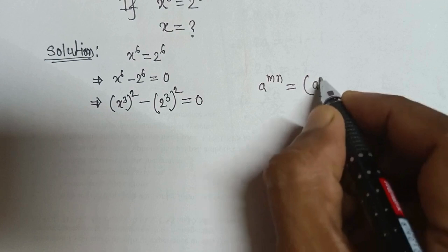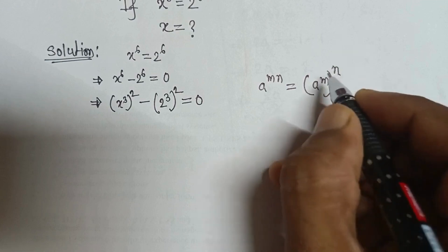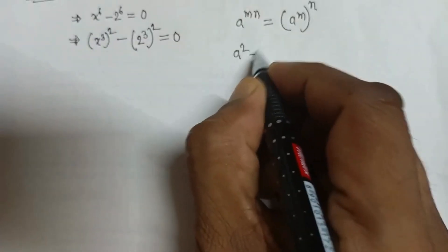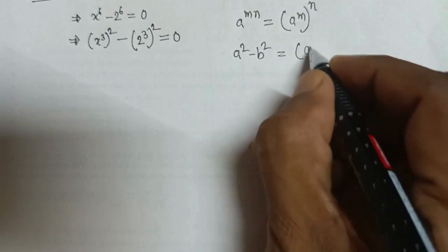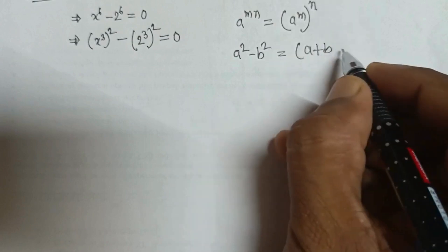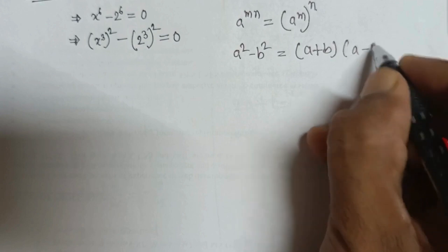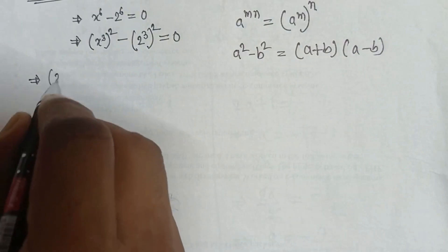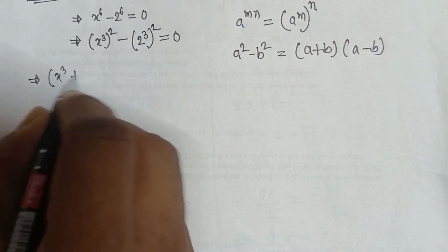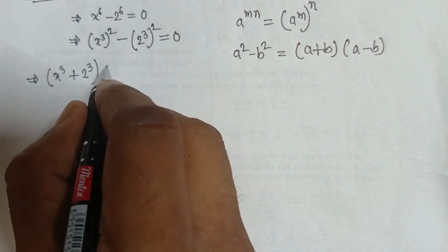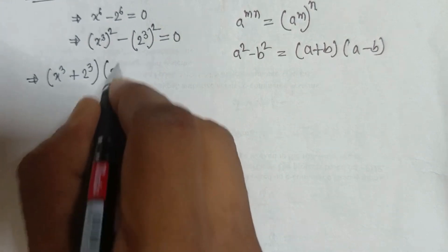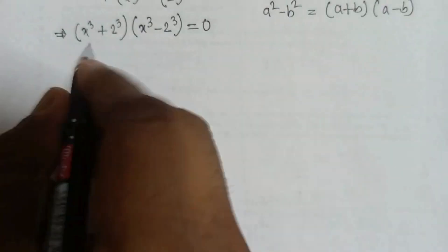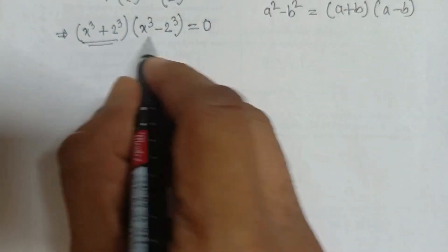As we know, a to the power mn equals a to the power m to the power n. We apply the formula a squared minus b squared equals a plus b into a minus b, giving us x cubed plus 2 cubed into x cubed minus 2 cubed equals 0.